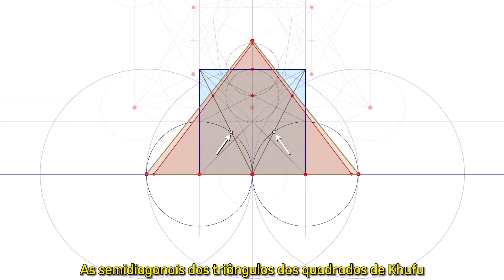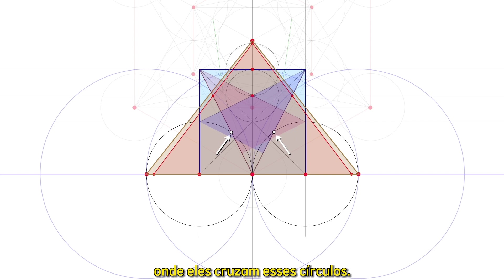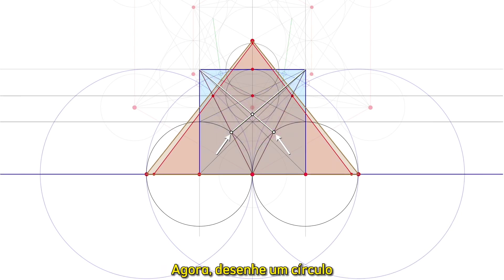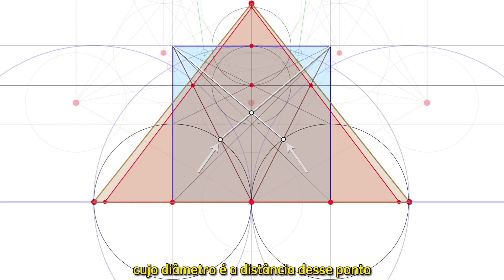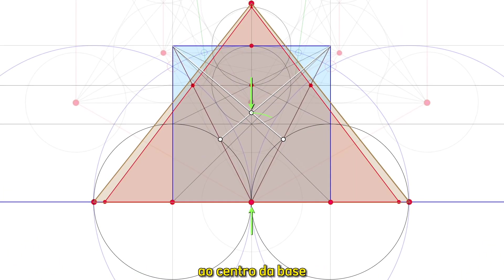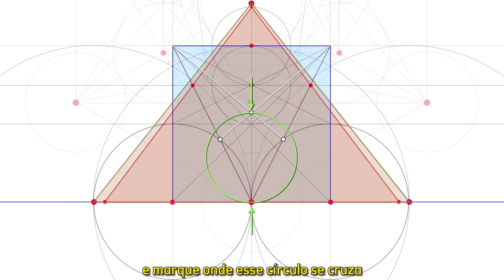The half diagonals of the Khufu square triangles produce two points where they intersect those circles. Connecting those points to the two upper corners gives us a new center point. Now, draw a circle whose diameter is the distance from that point to the center of the base and mark where that circle intersects the half diagonals.